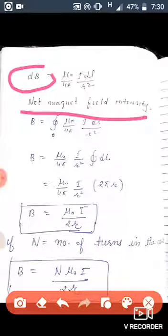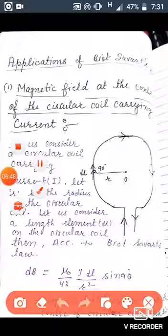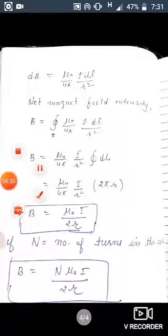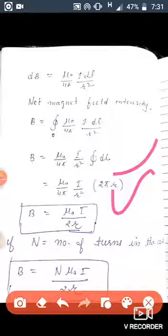To find the magnetic field intensity due to the complete coil, we integrate dB. The quantities μ₀/4π, current i, and radius r are constants, so only dl is the variable. After integrating, the total length equals the circumference of the circle, so the integral of dl becomes 2πr. The π cancels with π and 2 cancels with 4, giving us B = μ₀·i / 2r for a single circular loop.